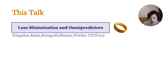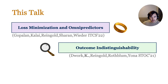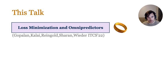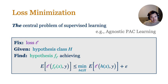This talk will consist of roughly three parts. In the first part, I'll tell you about a recent work which appeared at the last ITCS that revisits the idea of loss minimization through a solution concept called omnipredictors. In the second part, I'll tell you about outcome indistinguishability as an alternative paradigm for learning. And finally, I'll tell you about our results that derive new omnipredictor guarantees via outcome indistinguishability.